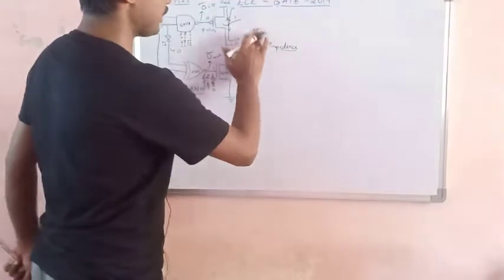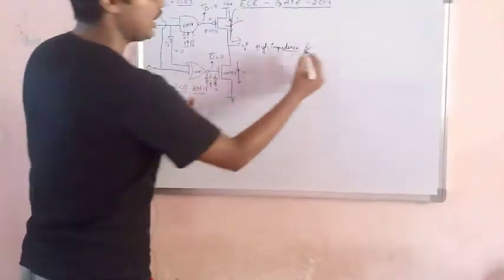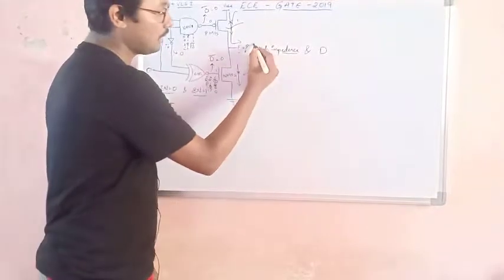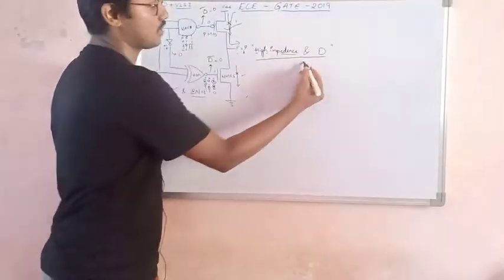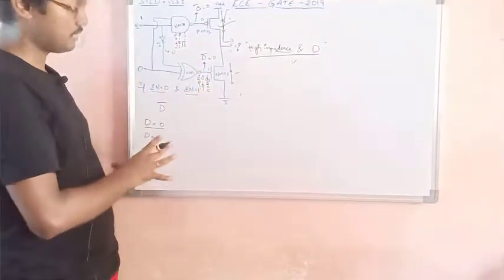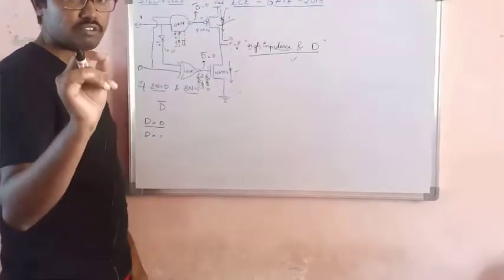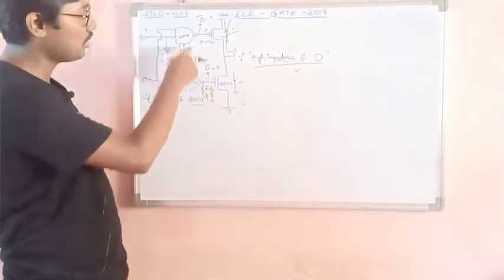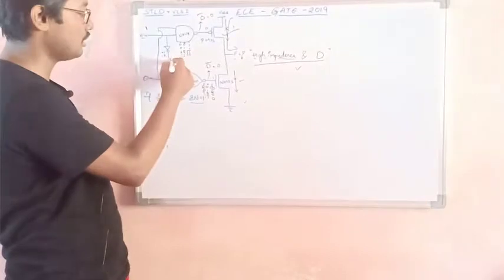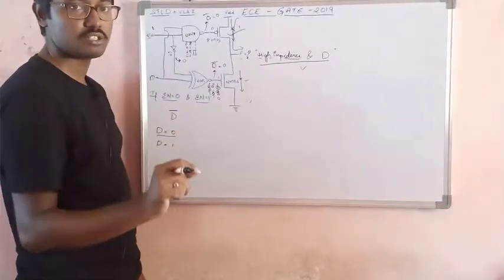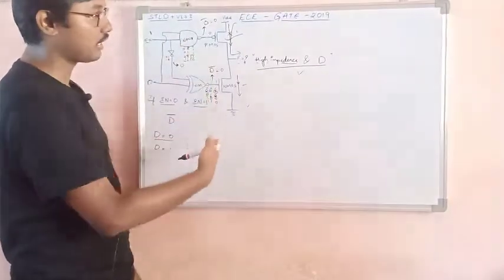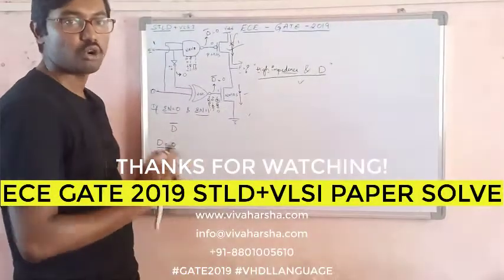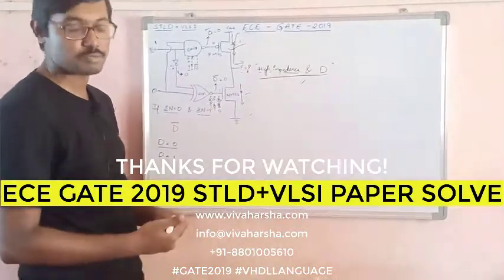So the first case when EN equals 0: output is high impedance. The second case when EN equals 1: output is D. That is your final answer — high impedance and D. This is how you evaluate these circuits; it takes maximum 40 to 50 seconds, or at most 1 minute to analyze. Write gate values with arrow marks and always use a pencil. Have patience when solving this kind of problem. Hope you understood this video — please like, share with your friends, and subscribe to my channel. Thank you.